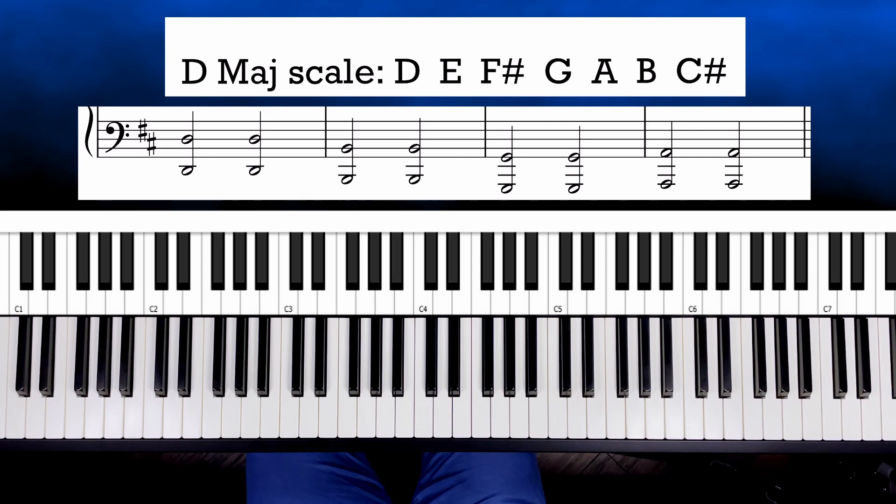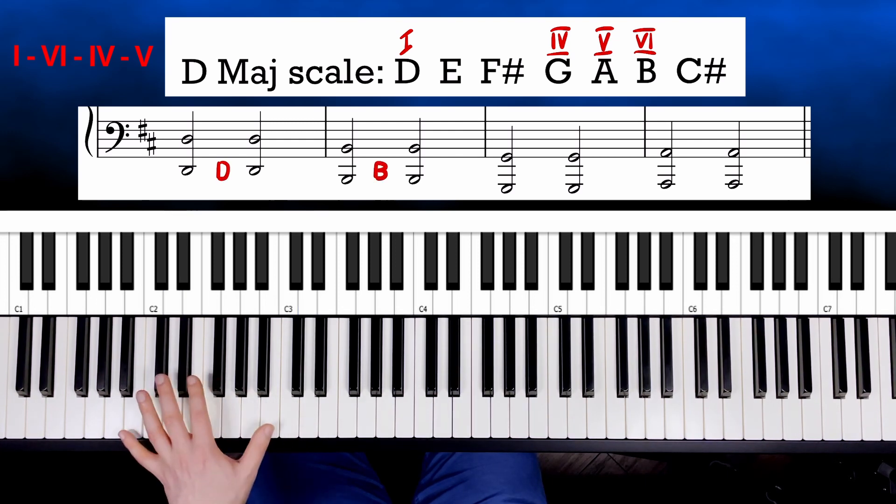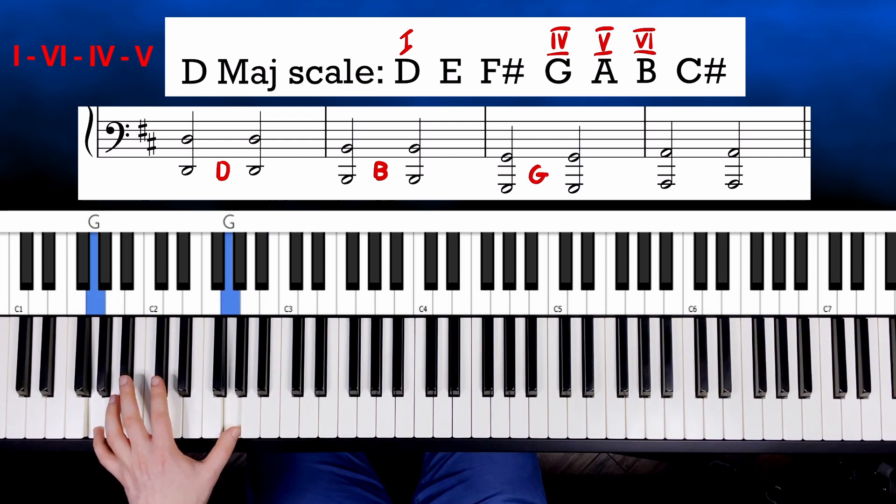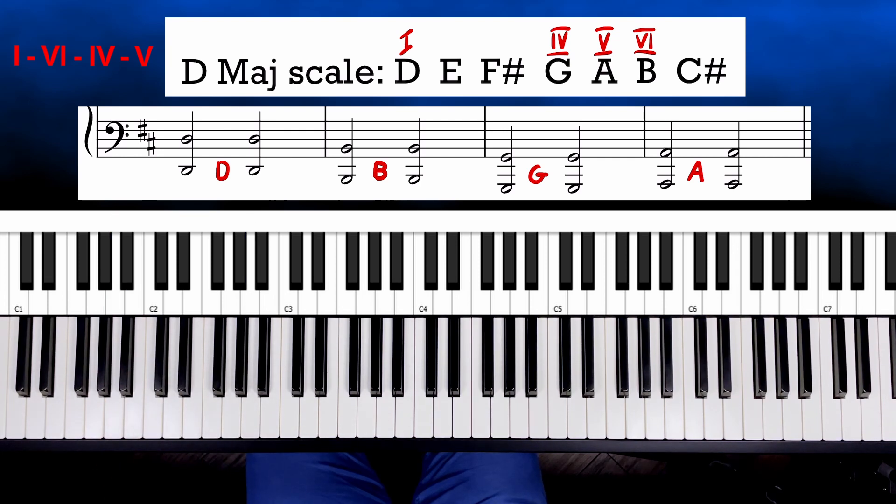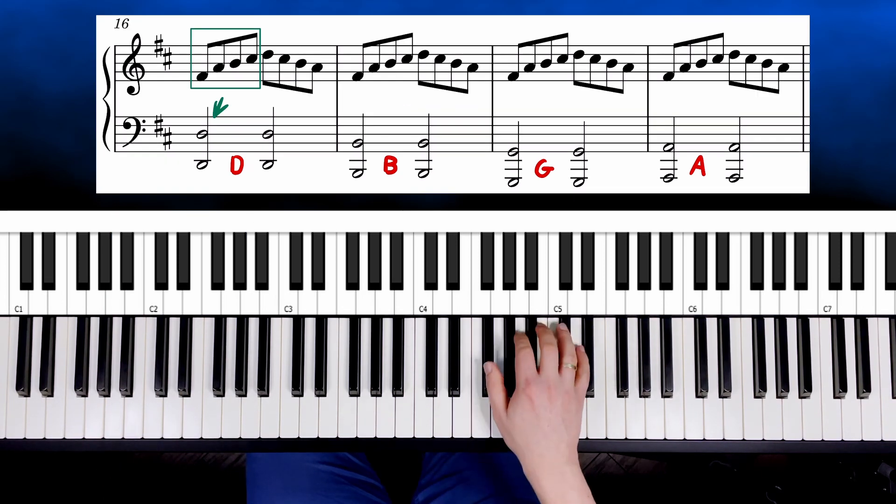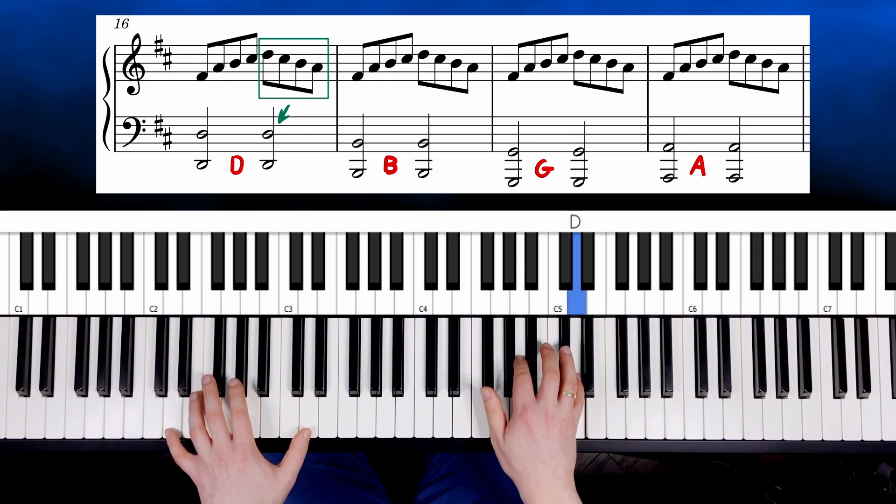Let's start with the octave jumps for the left hand. The progression will be 1, 6, 4, 5, which means I will start with the first step of D major scale, so D, then step number 6, B, then 4, G and 5, A. I will repeat each octave twice. First time when going with right hand up to C sharp, and second time when going down from D to A.